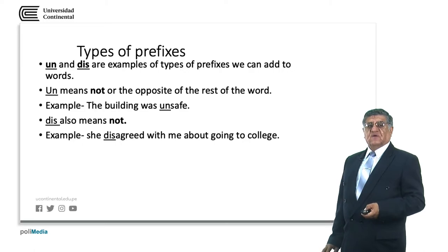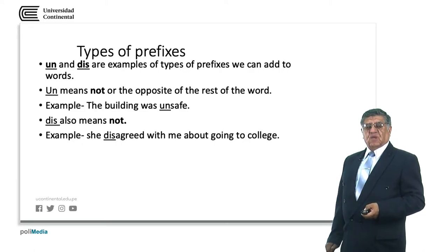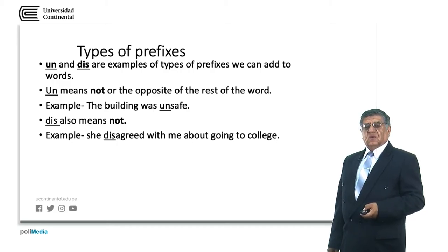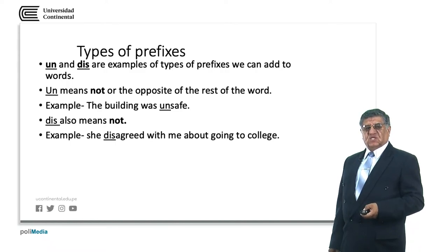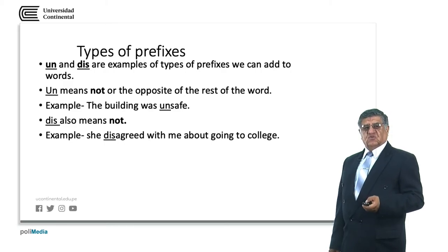So in the word 'disagreed' we have the main word — the root — 'agree,' to which was added a prefix, 'dis-,' and a suffix, '-ed,' giving us 'disagreed.' Let's continue.